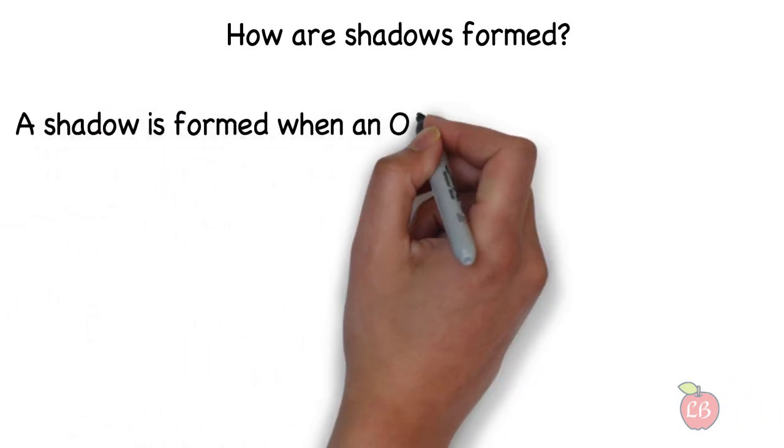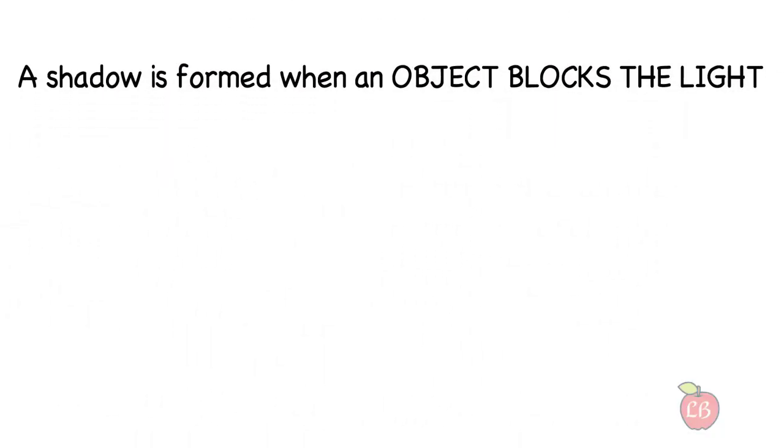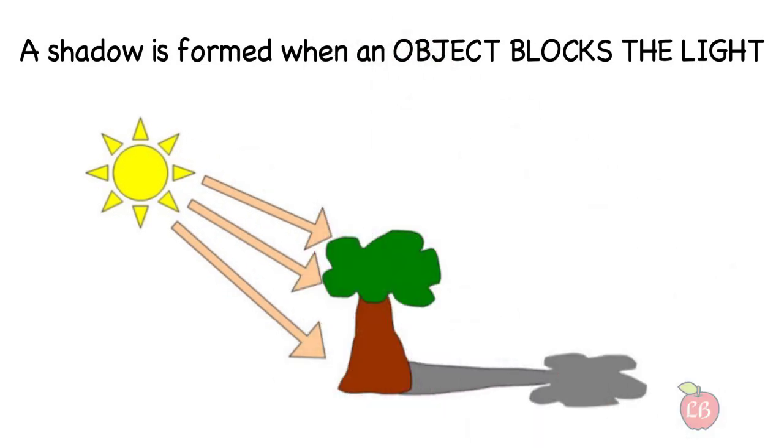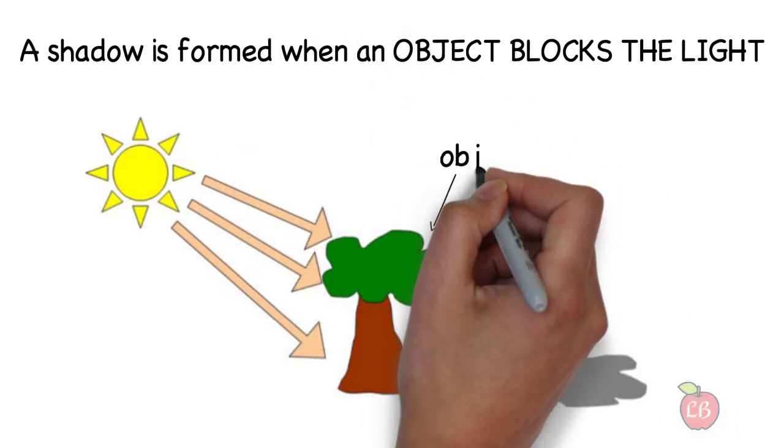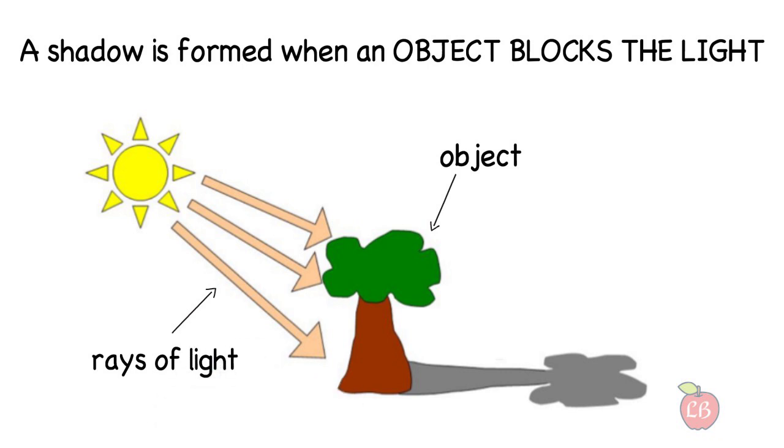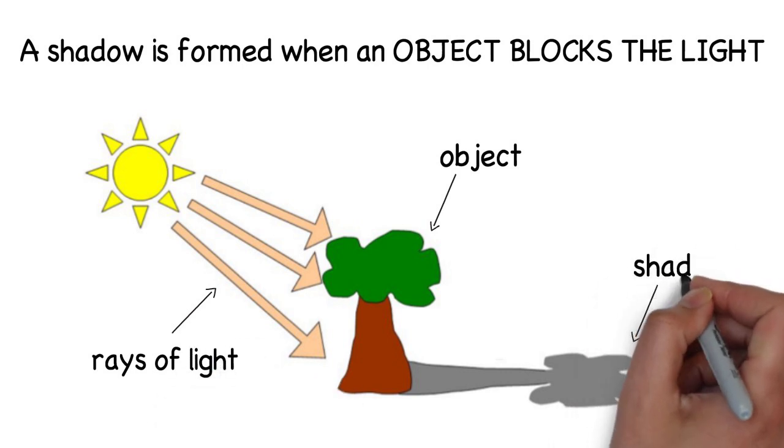A shadow is formed when an object blocks the light. Let's see this with an example. This tree is the object that is blocking the rays of light coming from the Sun, and as a result, a shadow is generated.